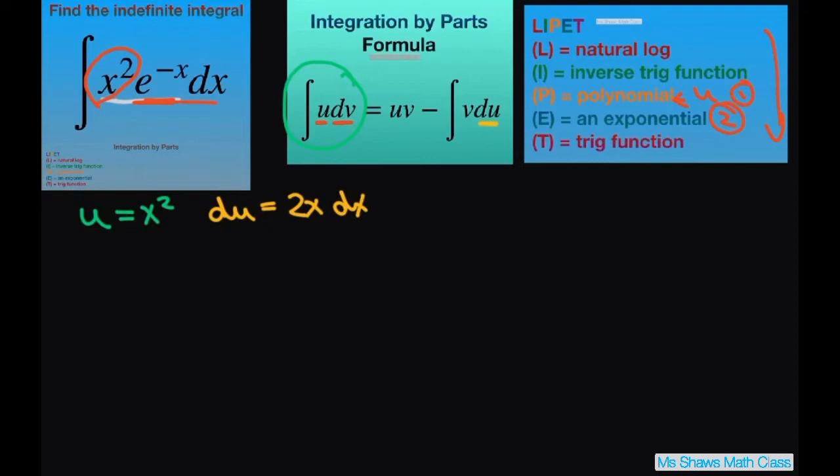So therefore our dv is going to be this, which is e to the power of negative x dx. So now we need our v. So our v is just going to be equal to the integral of e to the negative x dx. And that just equals negative e to the negative x.